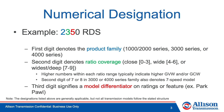Let's start by reviewing the numerical designation. The first digit denotes the product family. In the case of the 2350 RDS, this transmission is in the 1000-2000 product family. The second digit denotes the ratio coverage. If the number is between 0 and 3, the transmission has a close ratio. If it has a 4 to 6, it has a wide ratio.